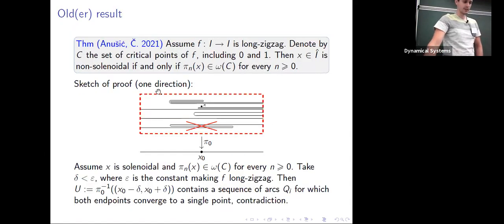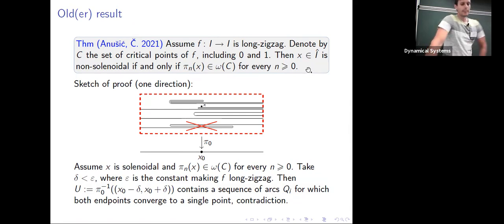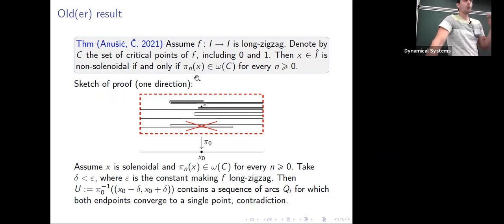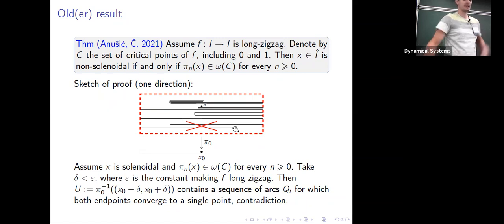An older result I want to mention: under the assumption of long zigzag, we completely characterized non-solenoidal points. A point is non-solenoidal if and only if all of its projections are contained in the omega-limit set of the critical points — a necessary and sufficient condition. The technical crux of the proof is that we are not allowed to have certain exact local arc patterns.